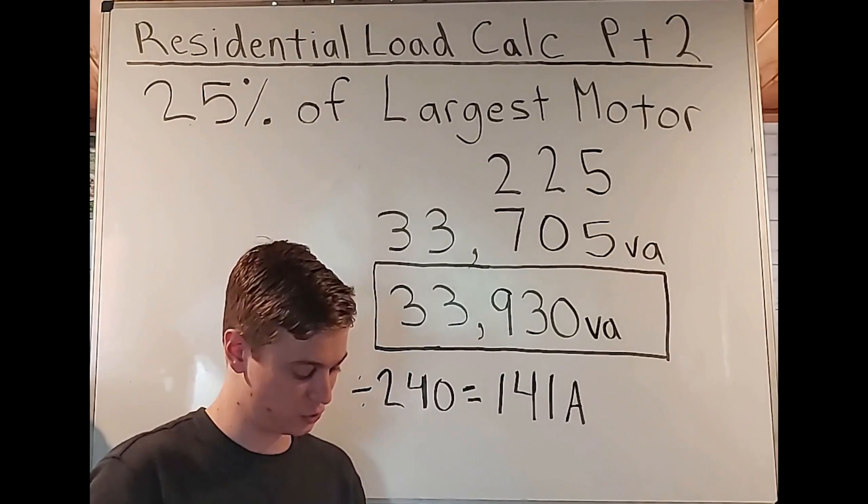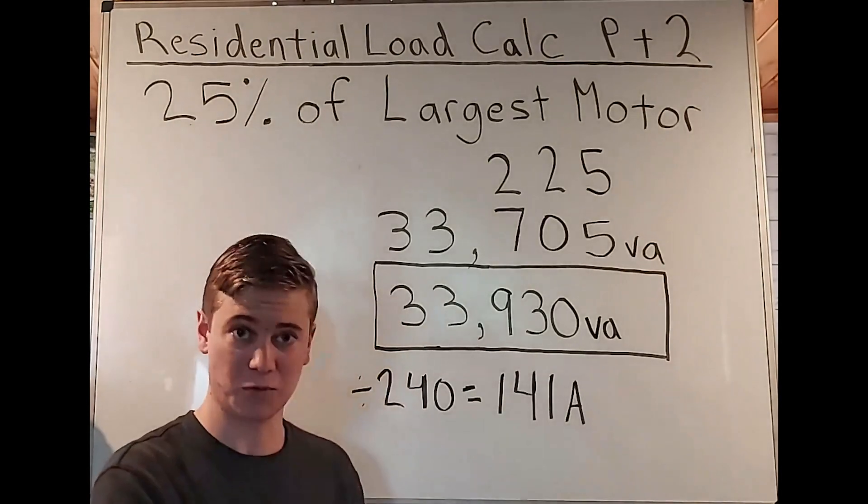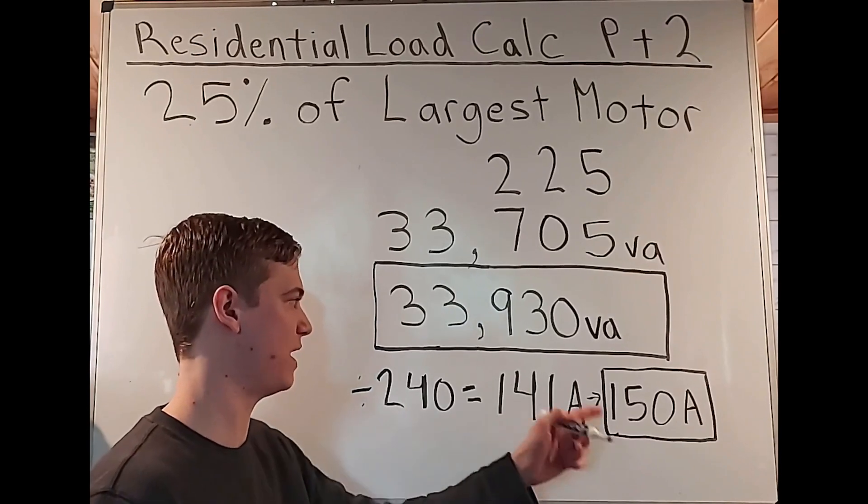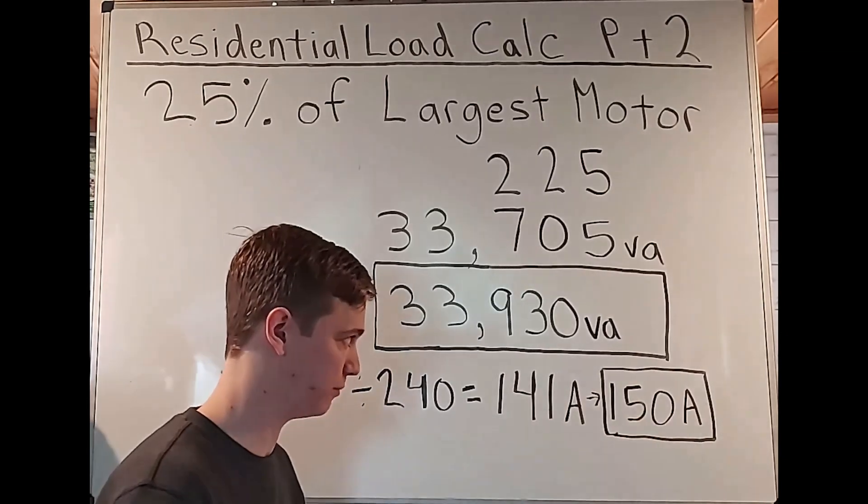So the first part we don't need to think about so much, but the second part is that it doesn't correspond with a standard rating. So we obviously see 141 is in the middle of 125 and 150. This is what it means as it doesn't correspond with a standard size. What you see in this table are the standard sizes. So if it fits in one of these standard sizes, you're going to pick that number and you're not going to size up to the next one. So it's basically saying if you're in the middle of two numbers here, 125 and 150, we have 141, then you're going to size up to your next size.